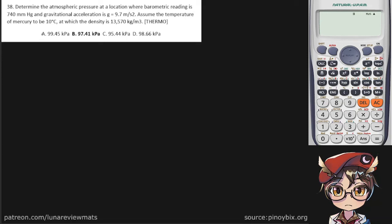Determine the atmospheric pressure at a location where barometric reading is 740 millimeters of mercury and gravitational acceleration is 9.7 meters per second squared. Assume the temperature of mercury to be 10 degrees Celsius at which the density is 13,570 kilograms per cubic meter.